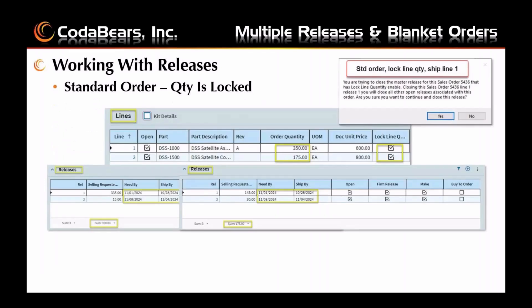This is the sample of the standard order where the quantity is locked. When you create a standard order with lines that have the quantity locked and enter multiple releases with different dates, as you add more releases the quantity of release one will be reduced. For example, line one release one started as a quantity of 350, then reduced to 335 as a new release was added, but the total quantity for the line remains at 350, which you can see in the list view of your releases.